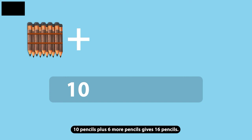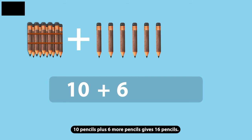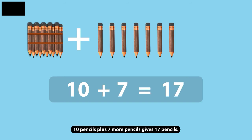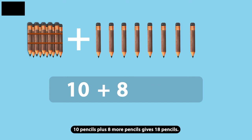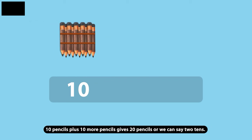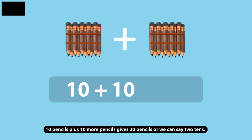10 pencils plus 6 more pencils gives 16 pencils. 10 pencils plus 7 more pencils gives 17 pencils. 10 pencils plus 8 more pencils gives 18 pencils. 10 pencils plus 9 more pencils gives 19 pencils. 10 pencils plus 10 more pencils gives 20 pencils, or we can say 2 tens.